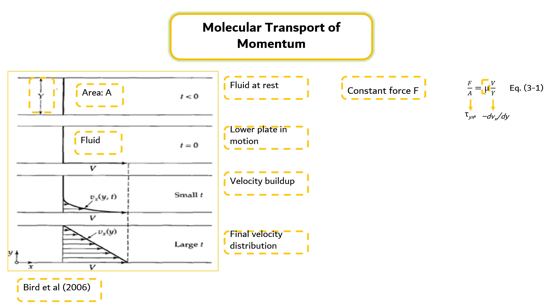Furthermore, we replace v per y by minus dvx per dy to yield equation 3.2. This equation, which states that the shearing force per unit area is proportional to the negative of the velocity gradient, is often called Newton's law of viscosity.